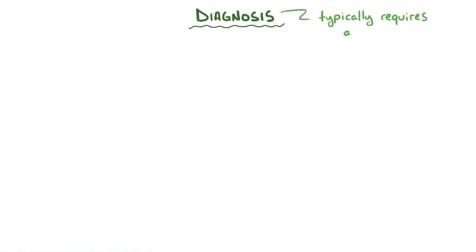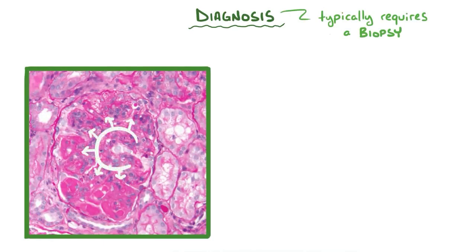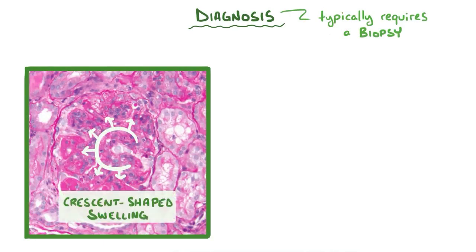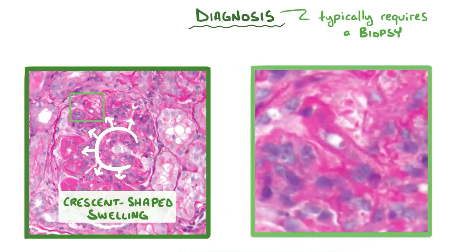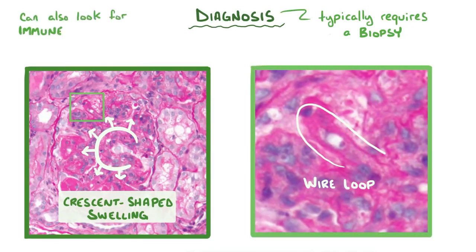Diagnosis of lupus nephritis typically requires a kidney biopsy. Deposition of immune complexes in the Bowman space results in a characteristic crescent-shaped swelling of the area, and deposition in the basement membrane can cause thickening of the structure, giving rise to a wire-loop pattern. It's also possible to look for the presence of immune markers like complement proteins and immunoglobulins in the glomerulus by staining them with fluorescent markers.